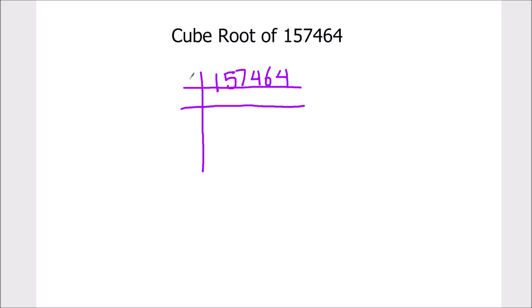As it is an even number, let's divide it by 2. 2 times 7 is 14, 1 is remainder, this becomes 17. 2 times 8 is 16, 1 is remainder, this becomes 14. 2 times 7 is 14. 2 times 3 is 6 and 2 times 2 is 4.